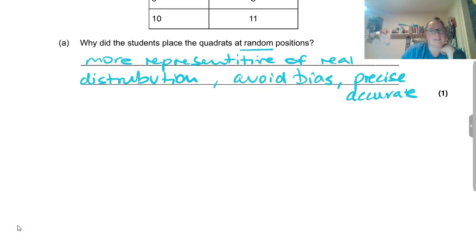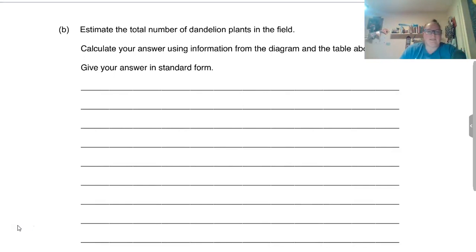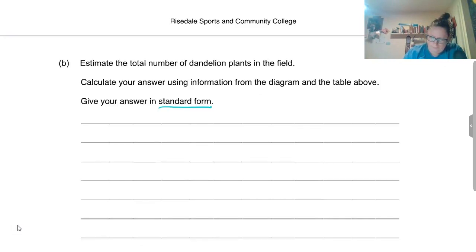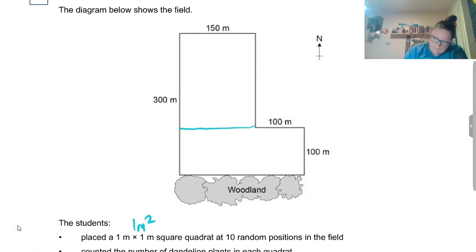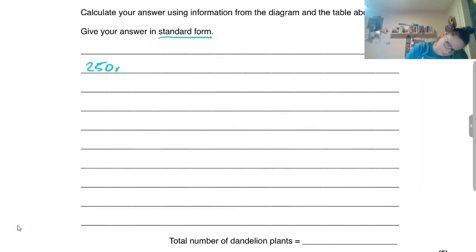Estimate the total number of dandelion plants in the field. Calculate your answer using information from the diagram and the table. Give your answer in standard form. I knew we'd have to go back to here. We've got two rectangles if we divide that up. We know that's 100, that's 100, then we know that that must be 100 meters. If that's 300 and we've taken 100 off, that's now 200. If that over there is 150, then that's going to be 150 plus 100, so it's going to be 250 across there as well. So we've got 200 by 150 square and 250 meters times 150 meters.